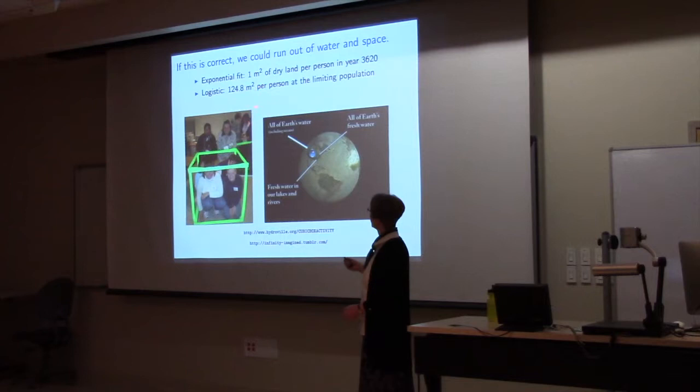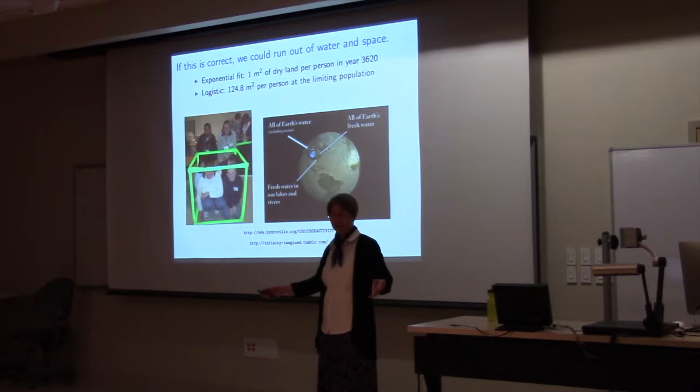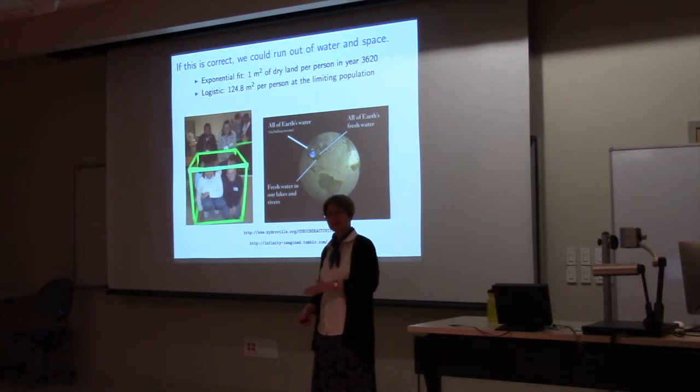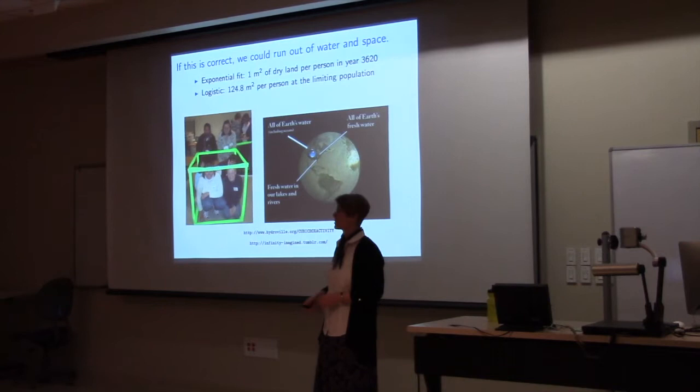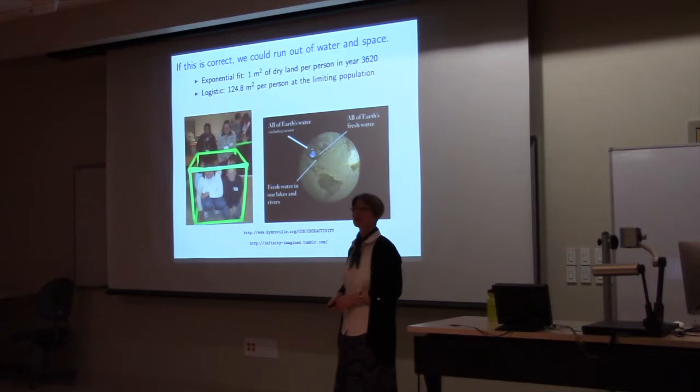Now if logistic is true, we end up with 124.8 meters squared per person at the limiting population. That's a bigger plot. I think that might be a piece of land about as big as this room. Remember that from that piece of land you have to get everything that you eat, everything that you need to live, your clothing, your shelter, etc. Of course we can solve some problems by building people up into gigantic skyscrapers, but let me say this is a terrifying number. That is not much to live off of.